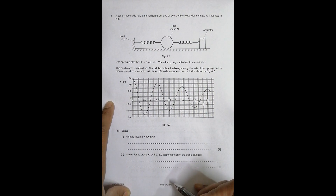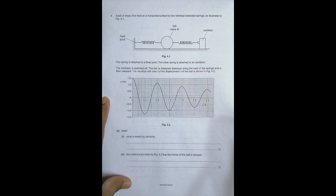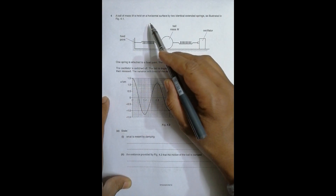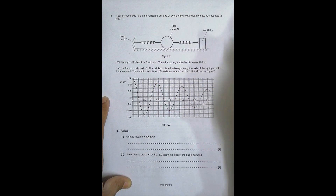Hello folks. This is the 2019 October/November Paper 4-2, question number 4. This question is concerned with periodic motion — simple harmonic motion and oscillations. It says that a ball of mass M is held on a horizontal surface by two identical external springs, as illustrated in figure 4.